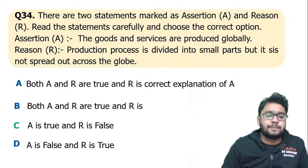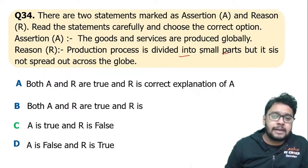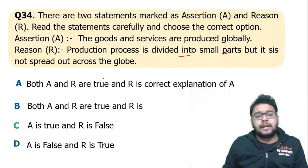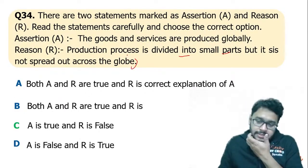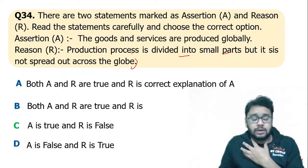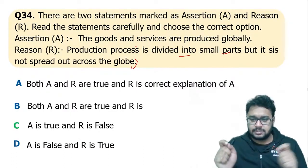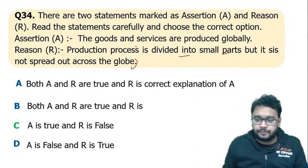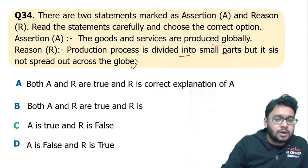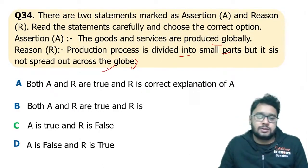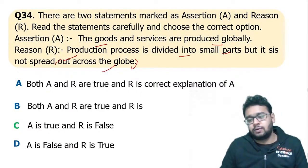There is an assertion and reason question: goods and services are produced globally and production process is divided into small parts. The assertion — that goods and services are produced globally — is true, but the reason — that production is spread across the globe — is false. So assertion is true, reason is false.